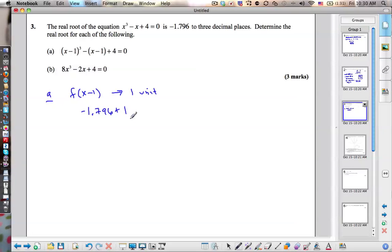So we'll add 1 to this, and we'll get negative 0.796. That's A.